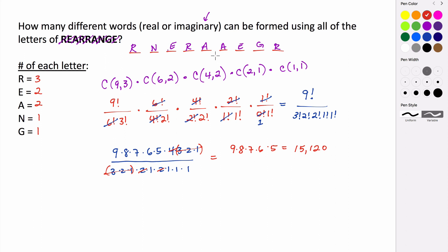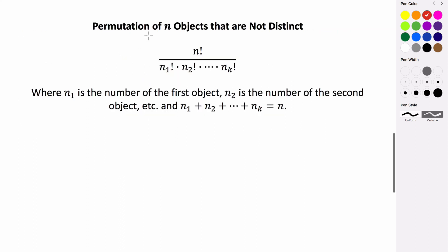Now there's actually a formula that we can use for a situation like this, where we're doing a permutation of non-distinct objects. And it looks like this. So the permutation of n objects that are not distinct is n factorial divided by n sub 1 factorial times n sub 2 factorial all the way to n sub k. Basically where each of our values in the denominator is the number of times that each object occurs within your arrangement.